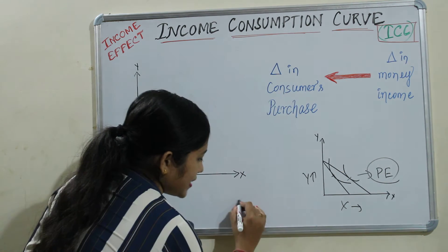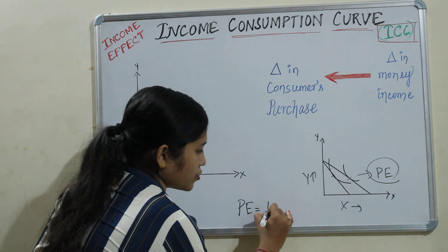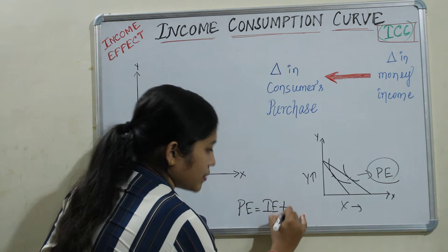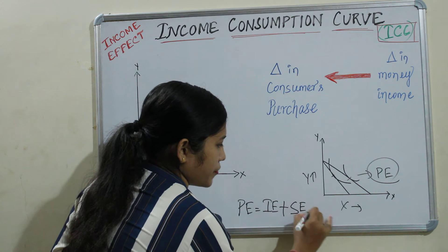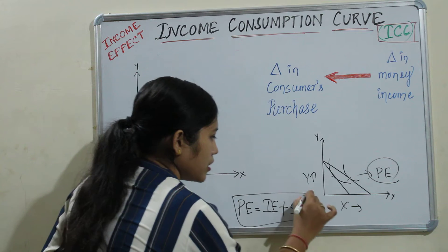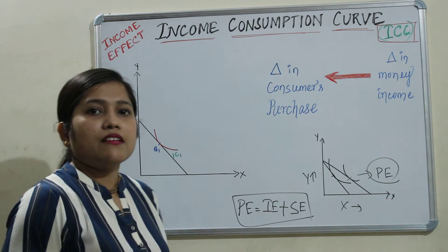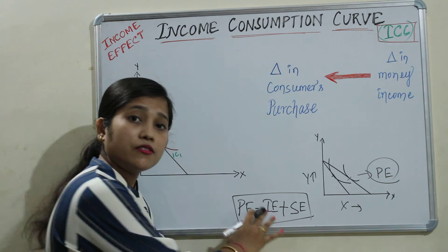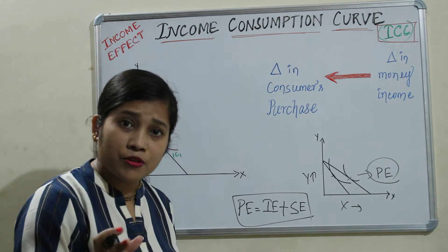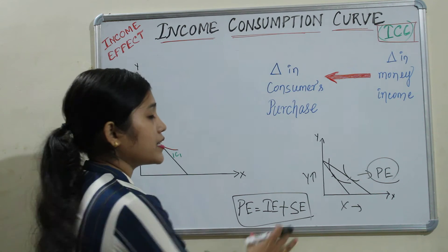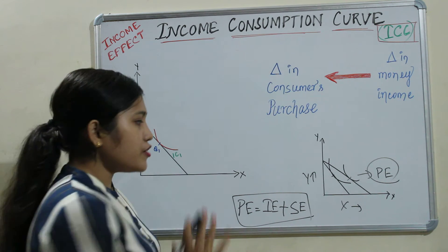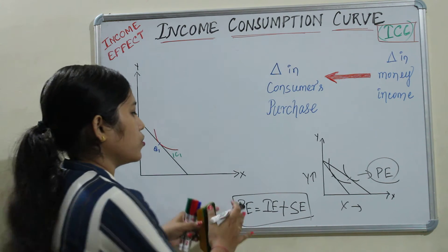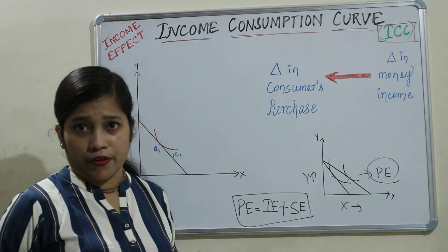Price effect equals income effect plus substitution effect. We will deal with price effect later, because individually first we will cover what is income effect and what is substitution effect. After knowing these two effects individually, we will go to price effect.